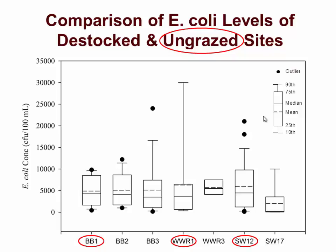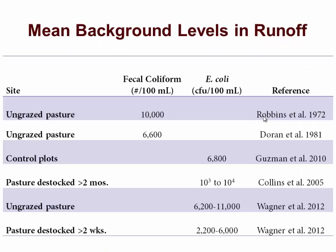There shouldn't be any residual bacteria from prior grazing at any of those ungrazed sites. After we got our data, I was pretty surprised at those background concentrations, but after looking back in the literature, even dating back to the 70s and 80s when we were measuring fecal coliform in ungrazed pastures, we were seeing fecal coliform levels of 6,000 to 10,000. More recent studies looking at E. coli show very similar results. So those resident wildlife populations are contributing a significant amount of loading and concentrations in the runoff.